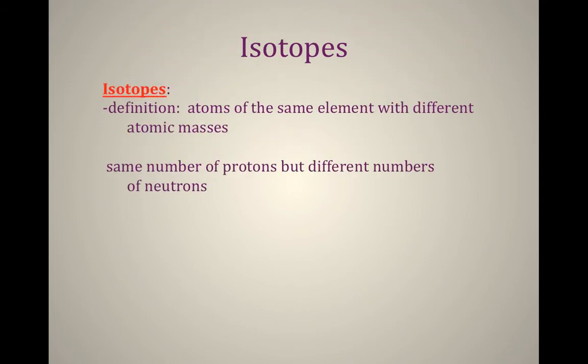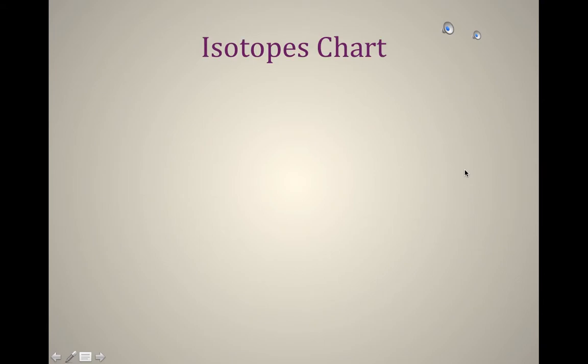So you should recall iso means the same, so isotopes means we're looking at different forms of the same element that have different atomic masses. If they're the same element they're going to have the same number of protons, and if they have different masses then they have to have different number of neutrons. And so now we get into some isotope charts.